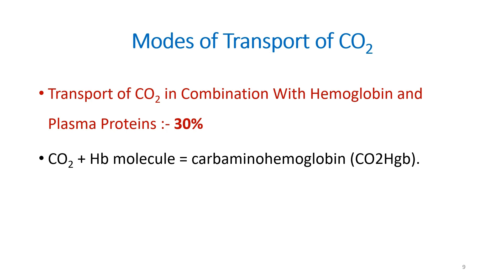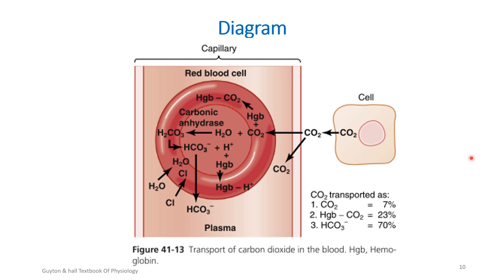Those were the three major methods of transport of carbon dioxide. We can draw a diagram showing all three forms. From the cell, carbon dioxide diffuses into the blood: 7% is transported in the dissolved form, 70% is transported by combining with water to form carbonic acid which dissociates into H⁺ and bicarbonate via the chloride shift, and around 23–30% combines with hemoglobin to form carbaminohemoglobin. This diagram is from the Guyton and Hall Textbook of Physiology and can easily be drawn during the exam.